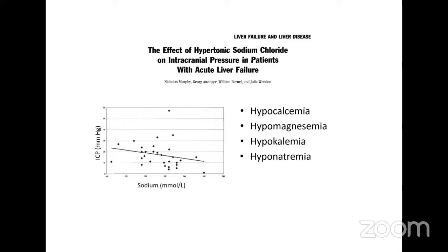Other electrolyte abnormalities — hyponatremia, hypocalcemia, and hypomagnesemia — need correction. It is important to maintain serum sodium between 145 and 155 by infusion of hypertonic saline. Studies show hypertonic saline decreases vasopressor requirements during the first 36 hours. Hyponatremia should be avoided, and sometimes renal replacement therapy may be required to correct it.